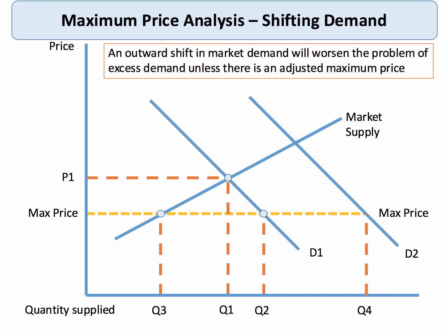The excess demand could be affected if there's an increase in demand — I've now shifted the demand curve out, perhaps because incomes have risen or there's been a change in consumer tastes and preferences. If we hold the maximum price, you can see there's now an even bigger excess demand. So one evaluation point is: is the maximum price rigid and fixed in stone, or is it flexible enough to take into account changing market conditions such as a shifting demand curve?